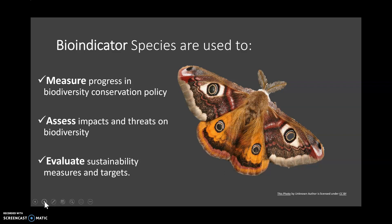They can also evaluate sustainability measures and goals. One of the difficulties with sustainability is measuring it — how do you know you've achieved your goals? One good way is through biodiversity, environmental quality, habitat quality, and water quality, and bio-indicator species can be used to evaluate all of that.